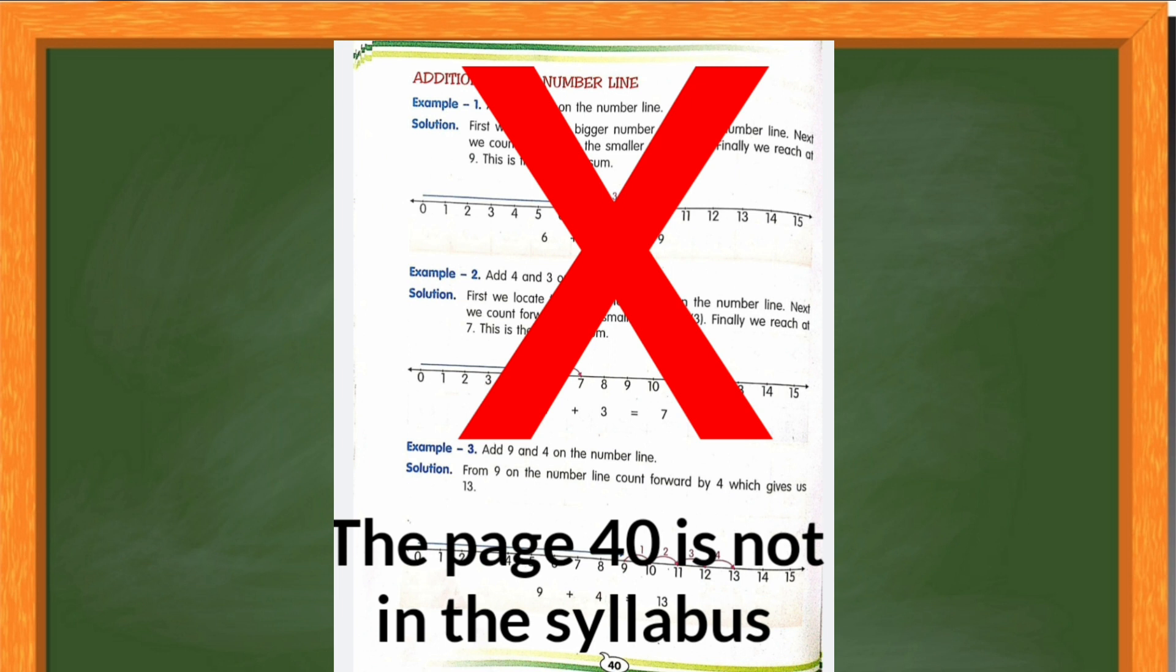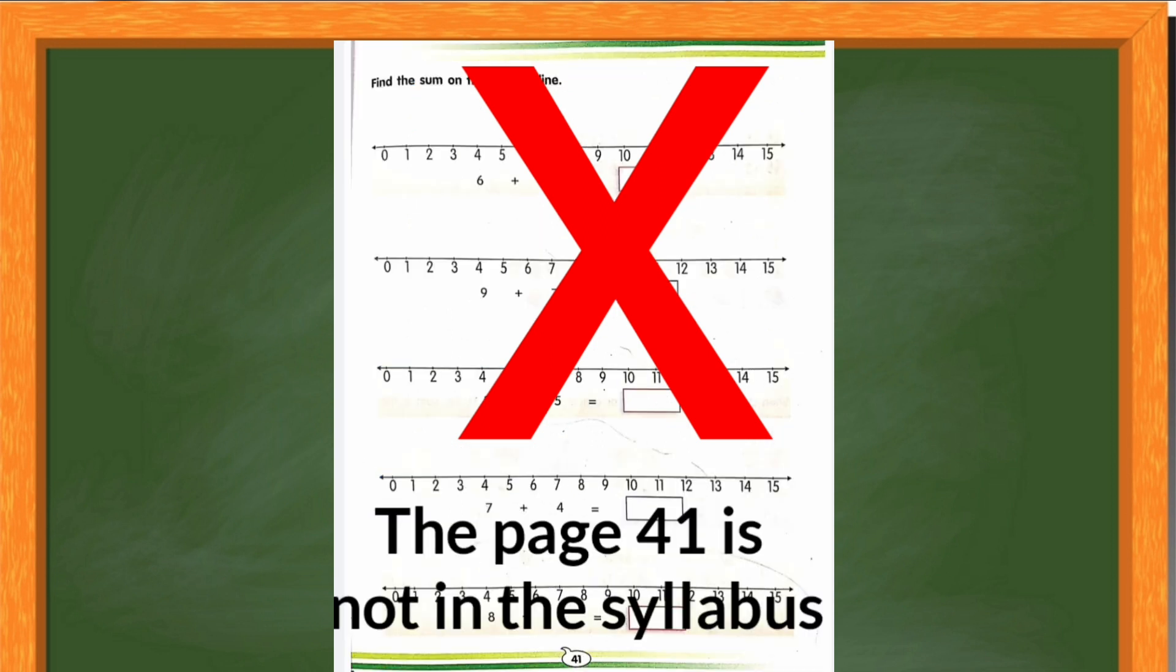Now moving on to page number 40. See, you have addition on the number line. But this year we don't have included in our syllabus. This is deleted from your syllabus. So I have put a big red cross mark. That means you don't have to do this page. Page number 41 and 40 in your book.